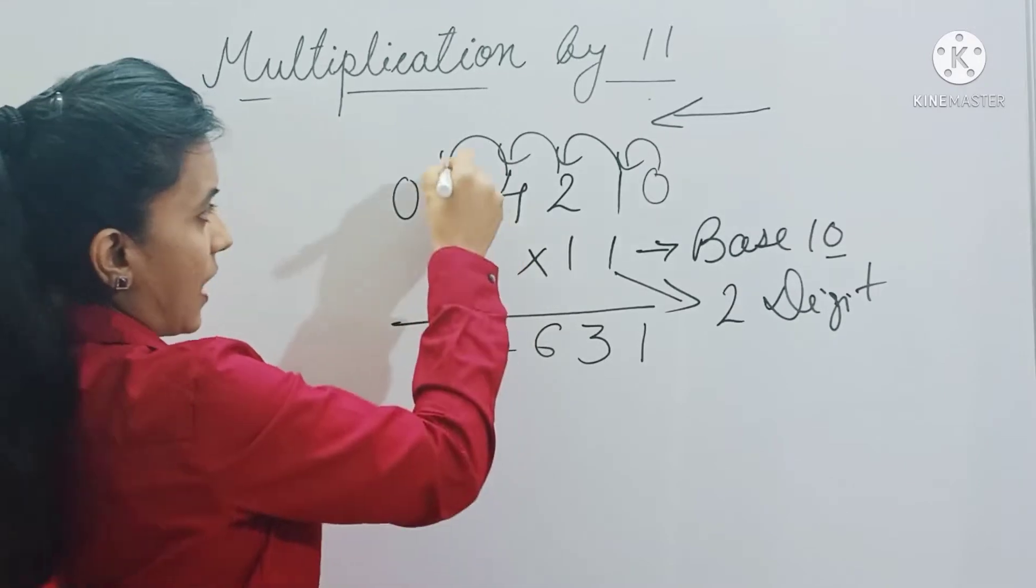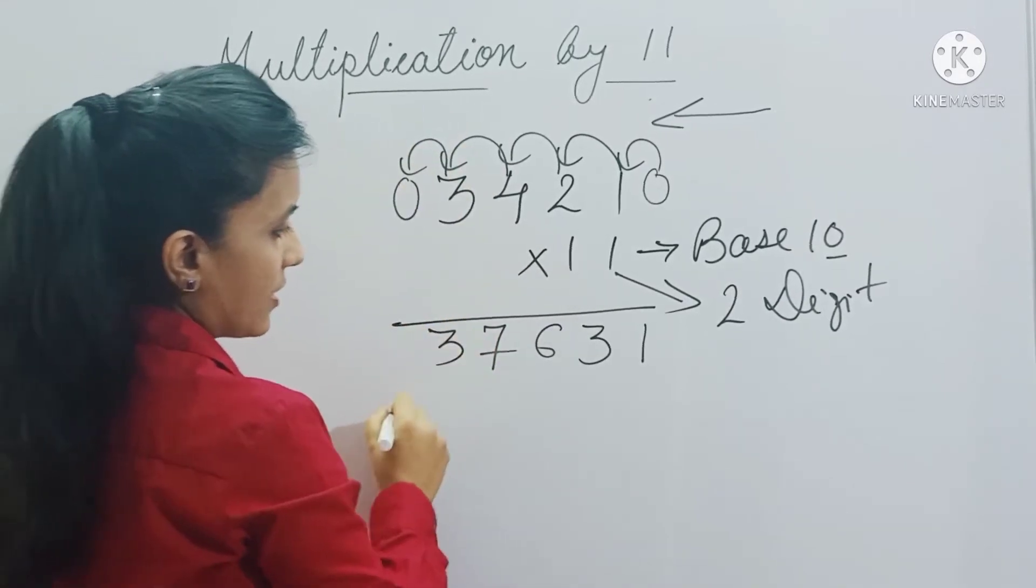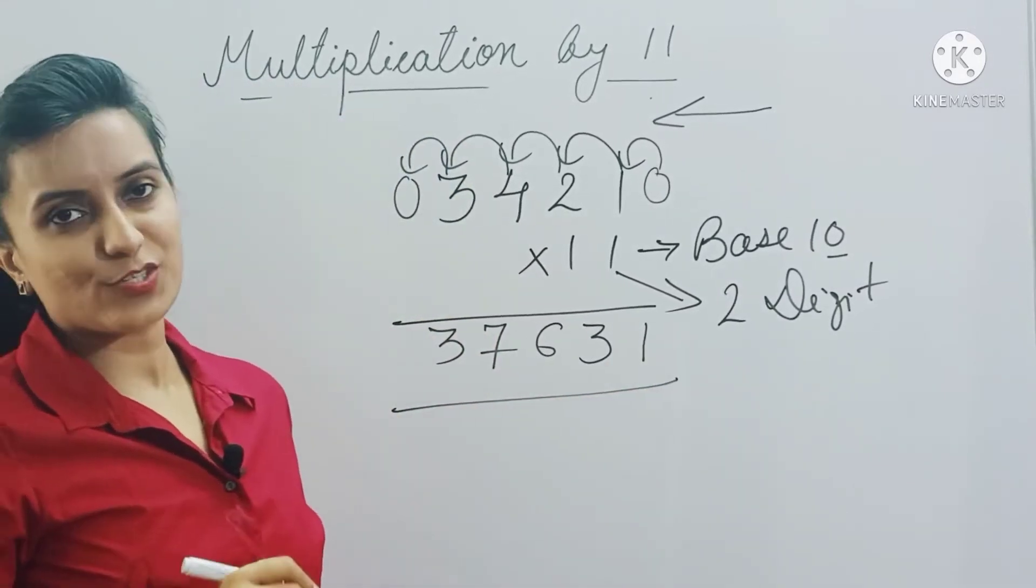And 3 plus 0 is 3. That's it, this is your answer. Isn't it super simple?